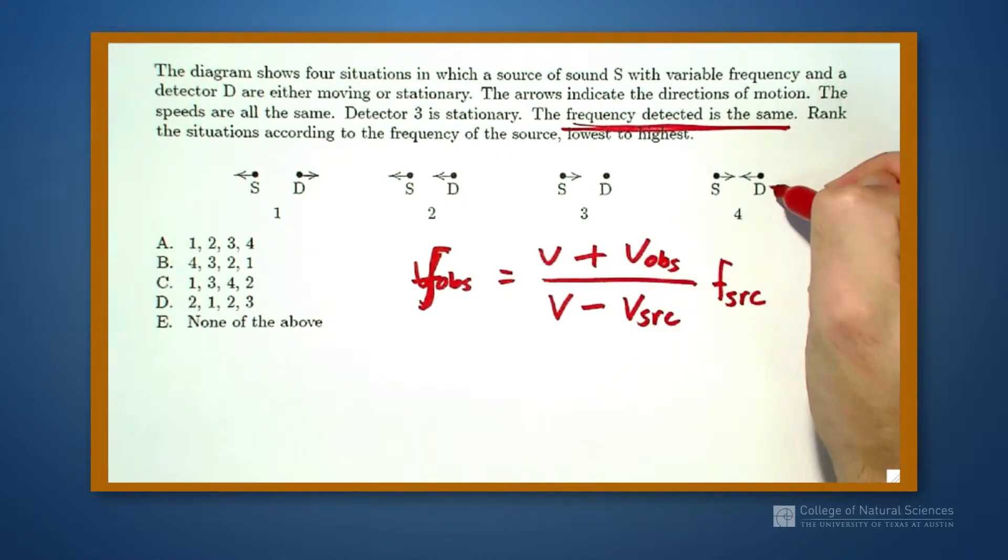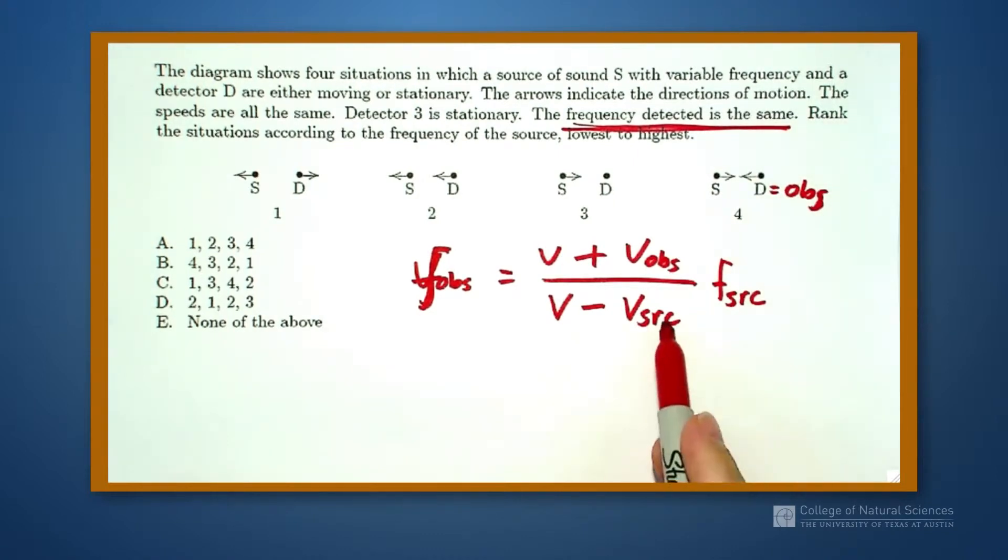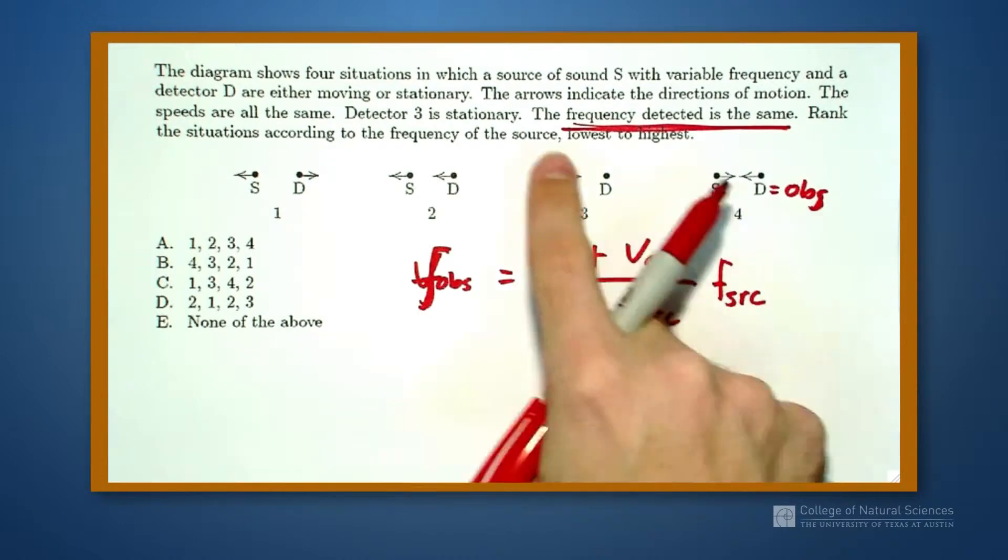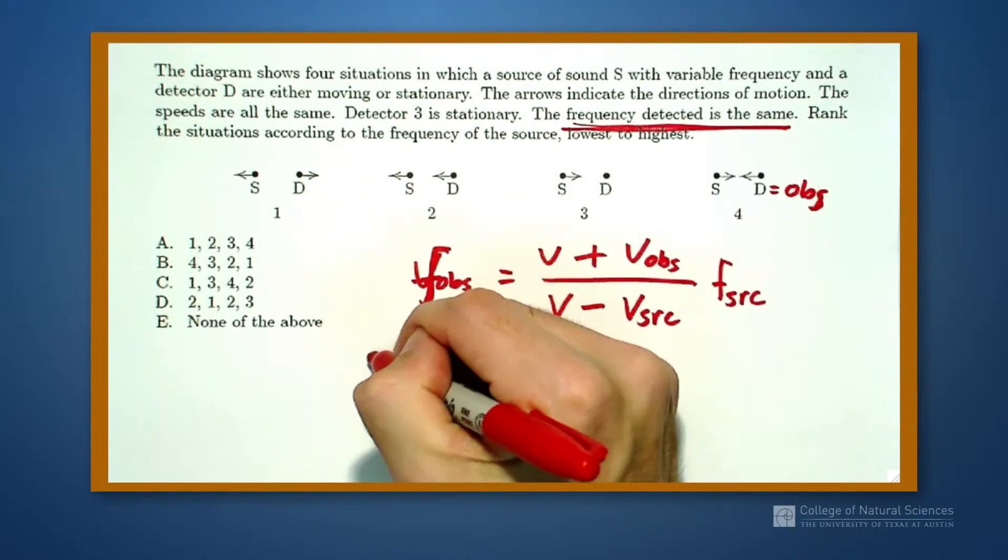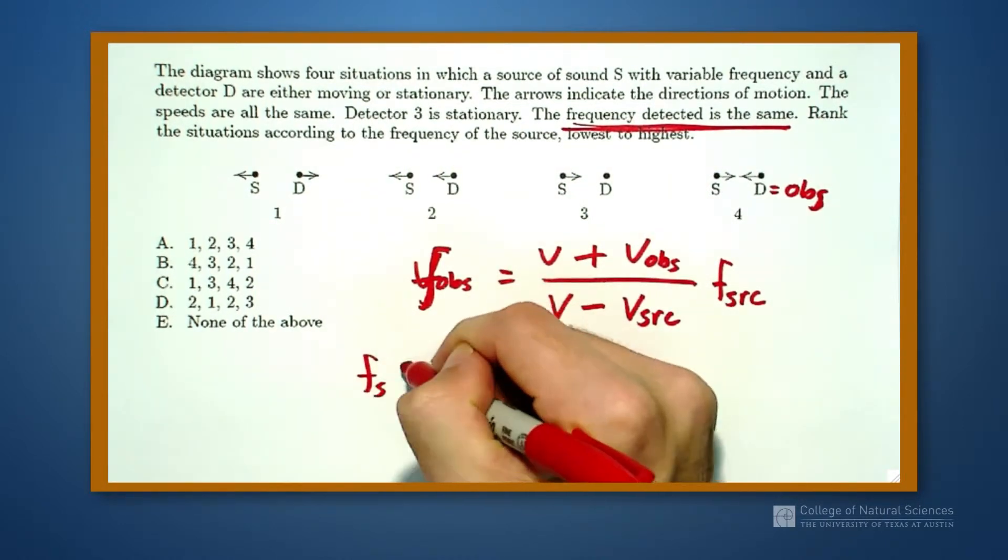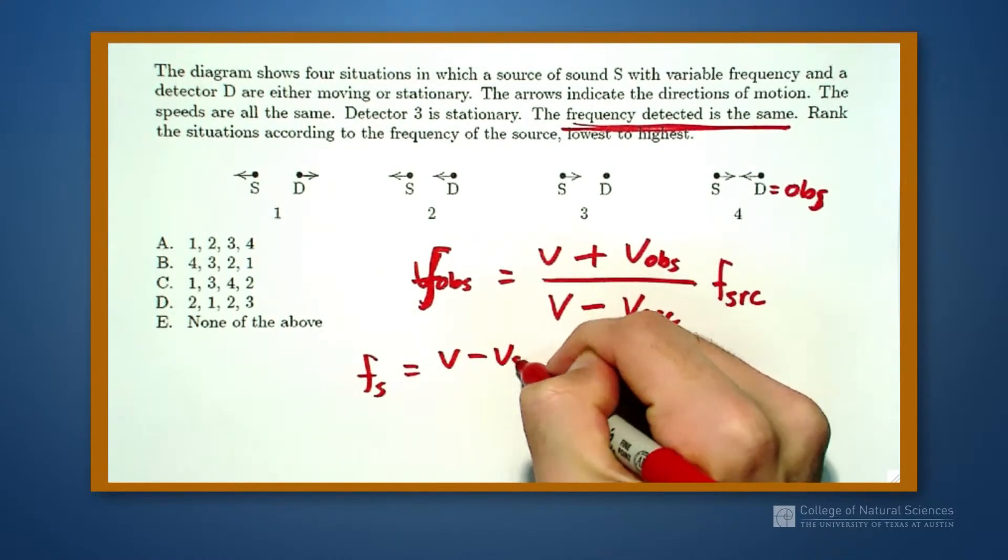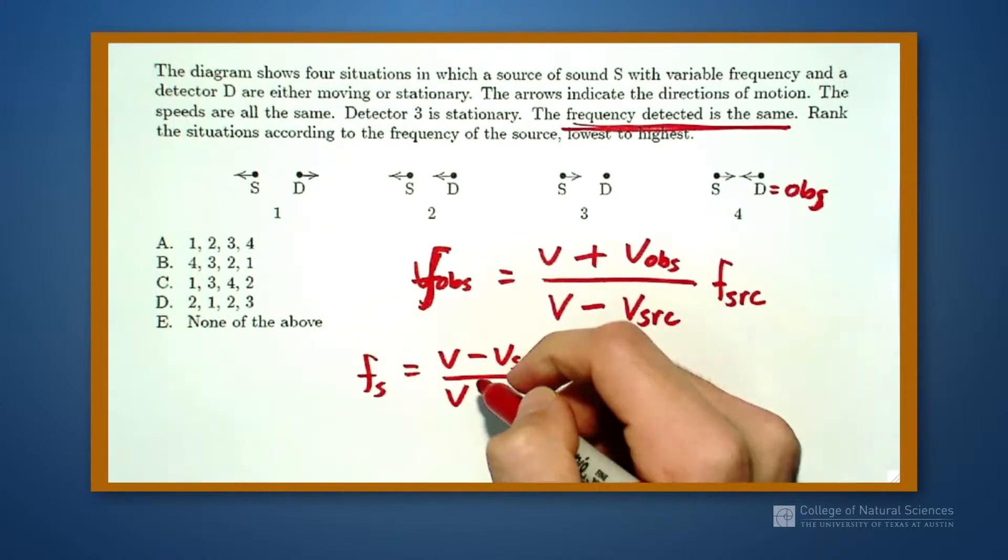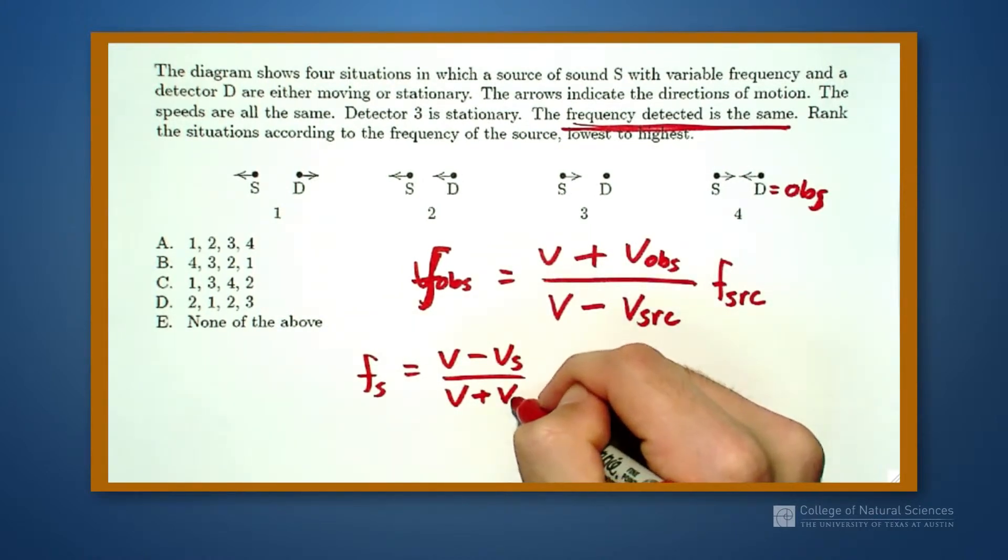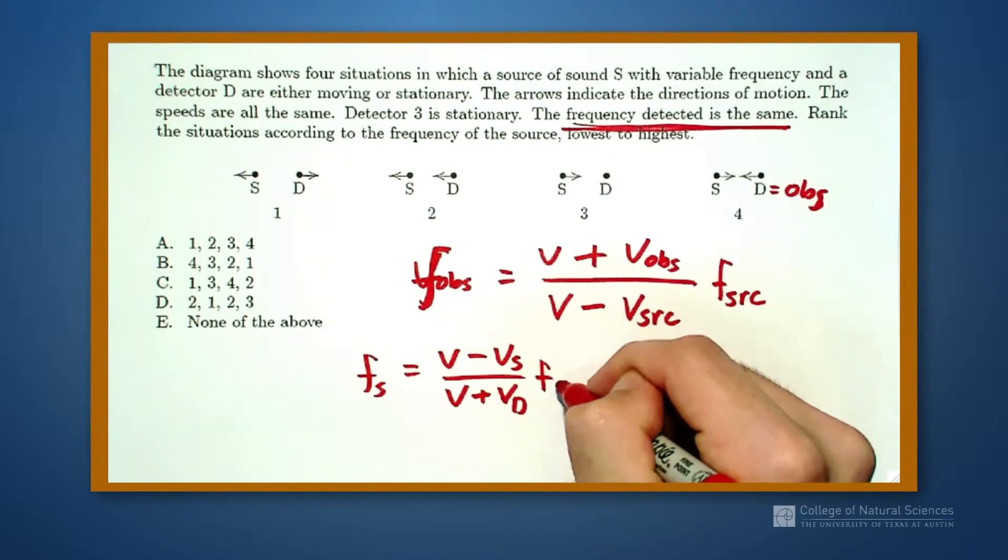So my observer is my detector. My source is my S. So if I rearrange this equation, I want to figure out what the frequency of the source is. So frequency of the source is equal to velocity of sound minus the velocity of the source over the velocity of sound plus the velocity of the detector, all times the frequency that we observe at the detector.